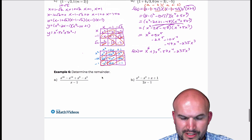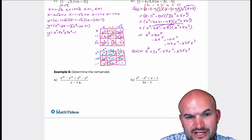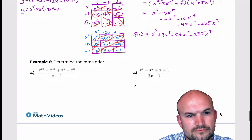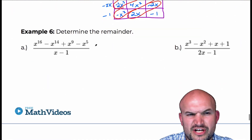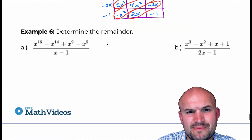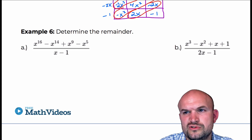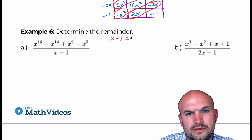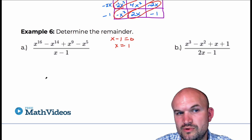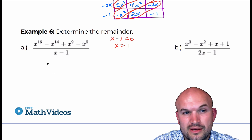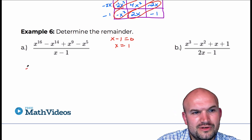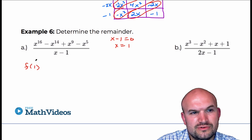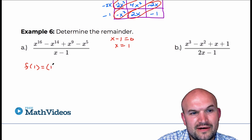And all we need to do to find the remainder is plug it into our equation. Looking at our example here, our factor is x minus 1. So the first step is to set it equal to zero to find the zero: x equals 1. Rather than doing synthetic division with 1 — which you could do — you can just evaluate f of 1. Take this as being our function f of x and just plug 1 into it.